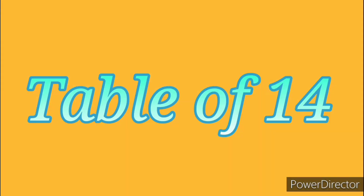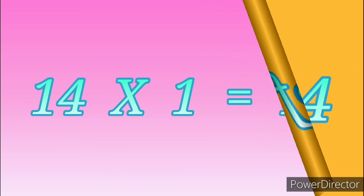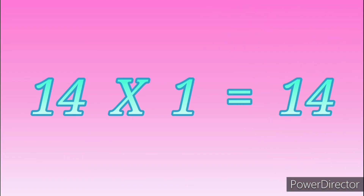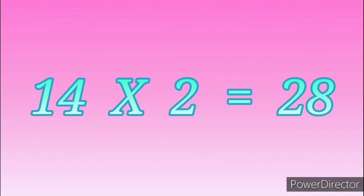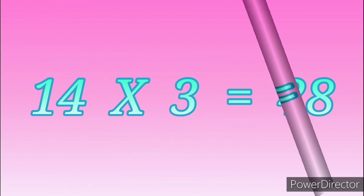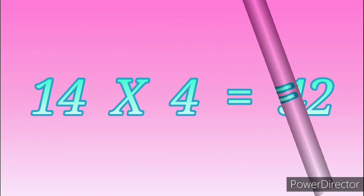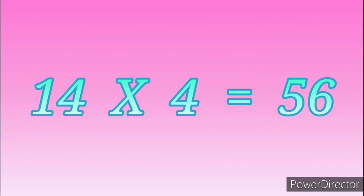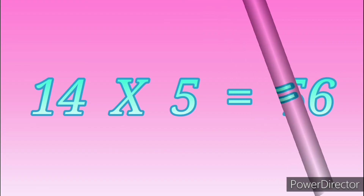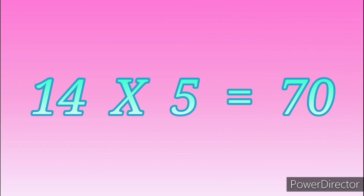Table of Fourteen. Fourteen ones are fourteen. Fourteen twos are twenty-eight. Fourteen threes are forty-two. Fourteen fours are fifty-six. Fourteen fives are seventy.